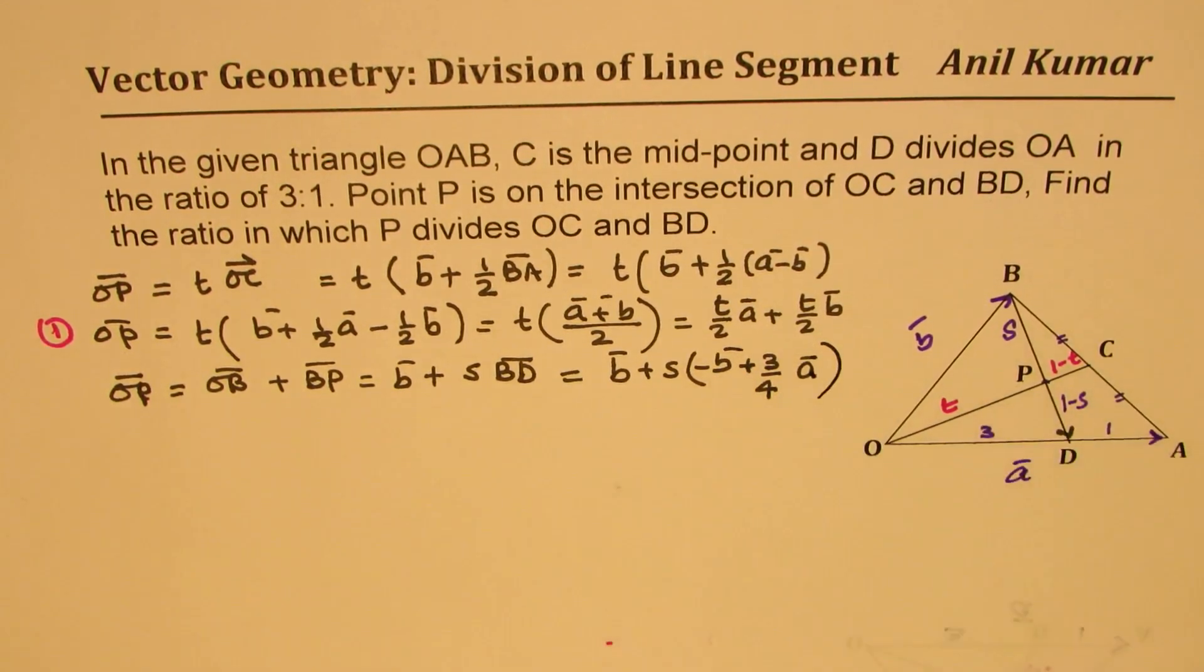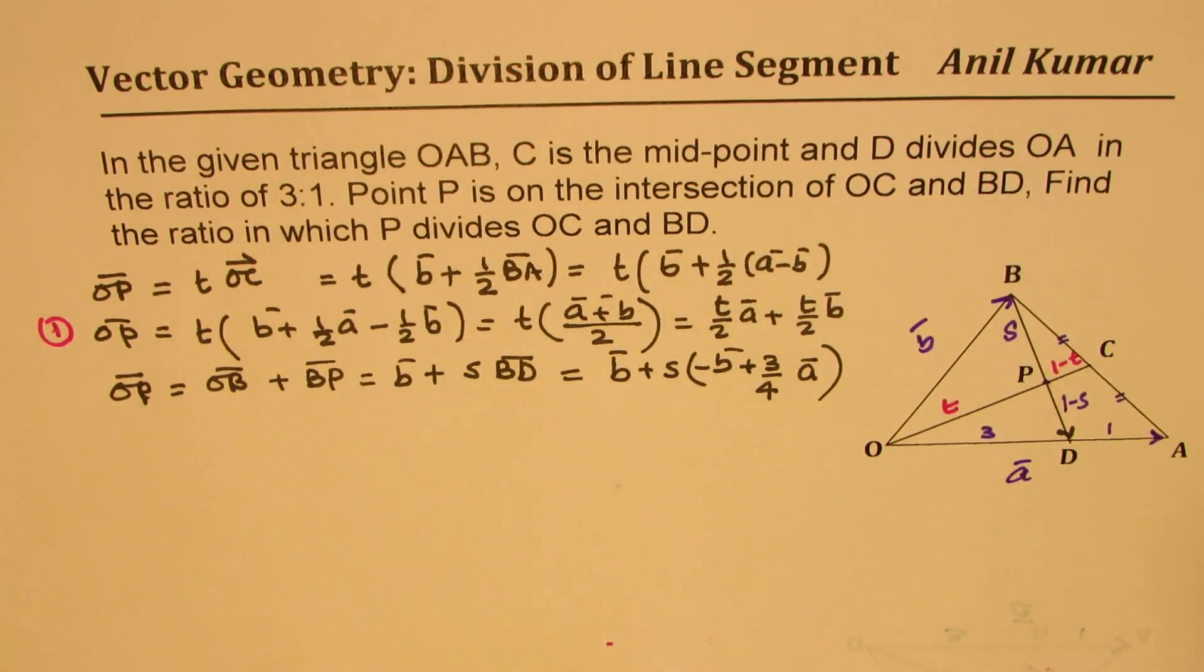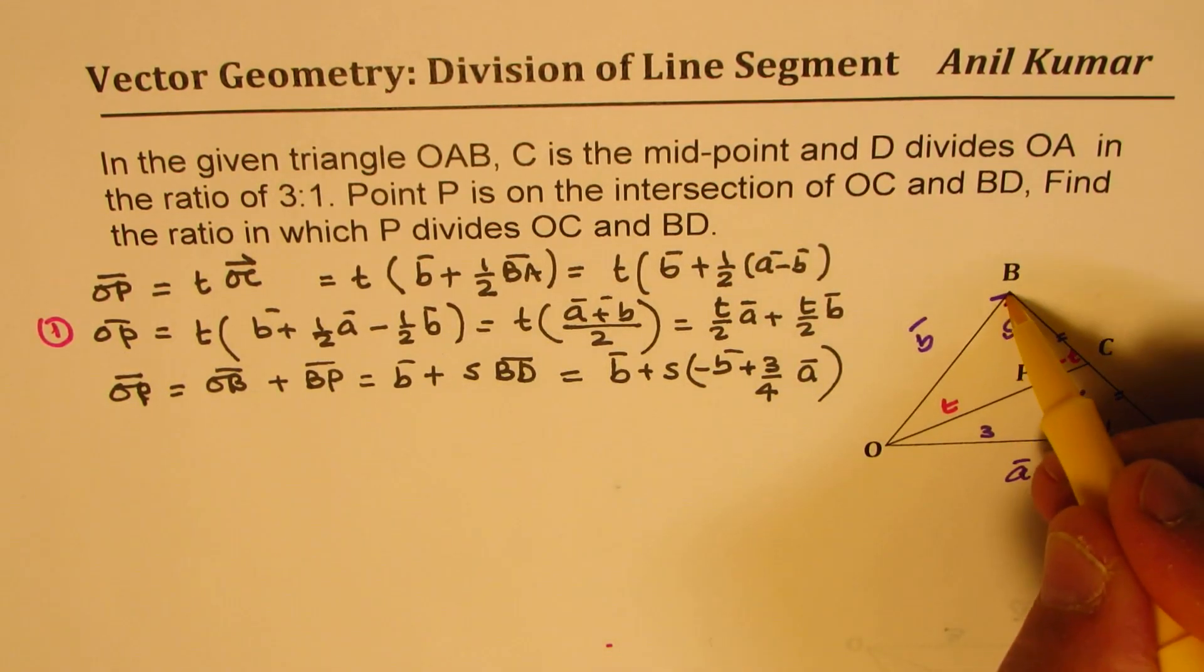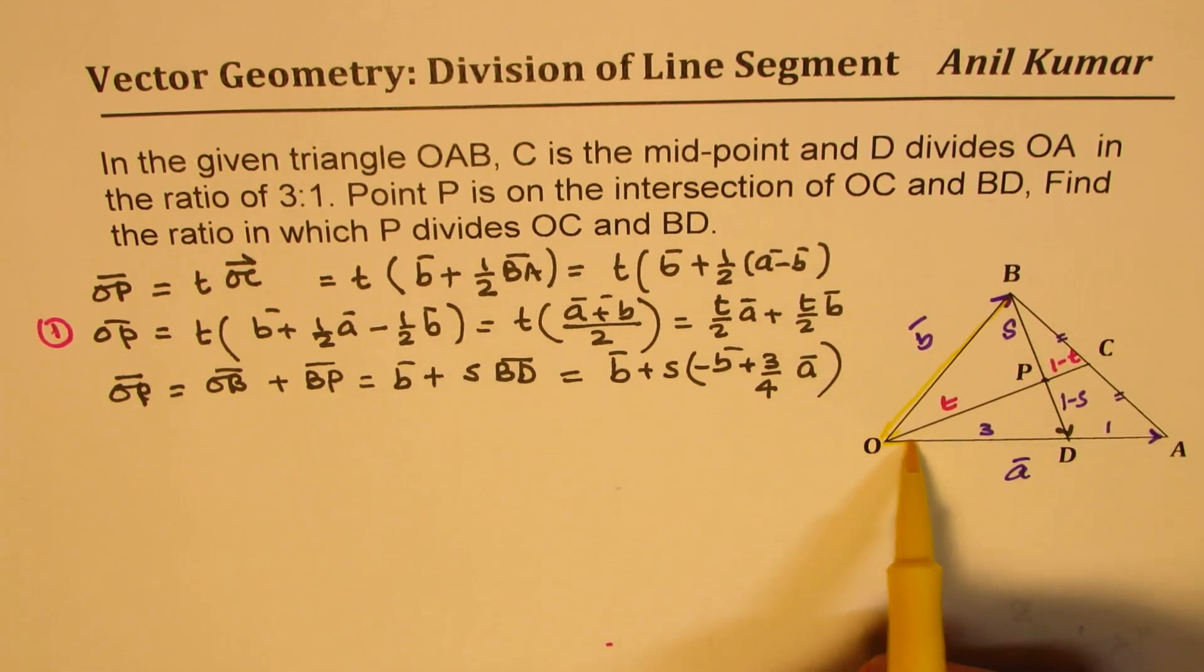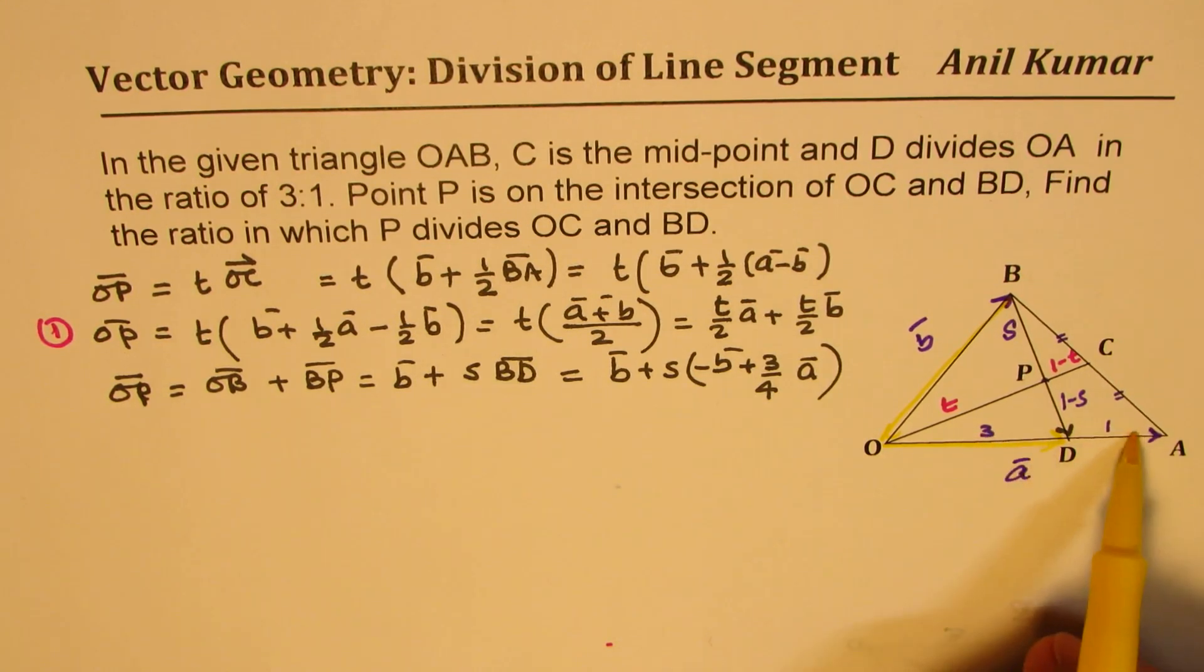Does it make sense to you? So, what we did here was something like this. We want what is B to D. So, we came here. So, this is a negative direction, negative B, and then went like this. So, 3 over 4. This is, total is 4 parts, 3 plus 1. This is 3 parts of A. So, that is how we get our equation.